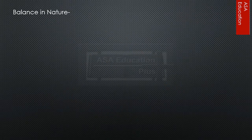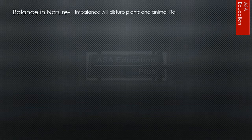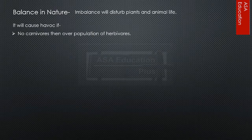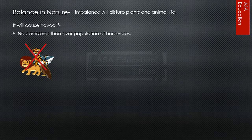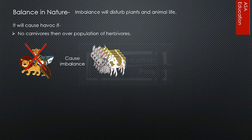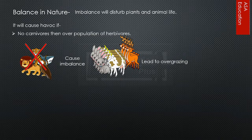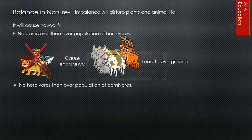Balance in nature: imbalance will disturb plant and animal life. It will cause havoc if there are no carnivores, then there will be overpopulation of herbivores, which leads to overgrazing. If there are no herbivores, then there will be overpopulation of carnivores.